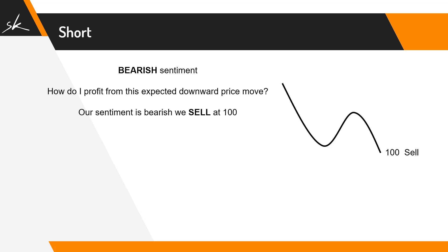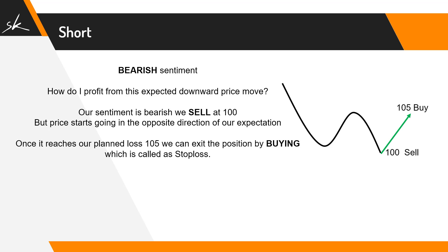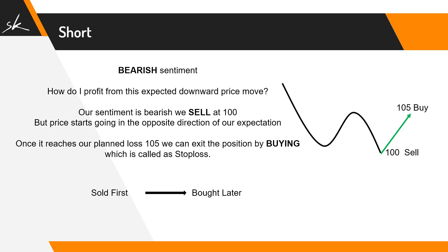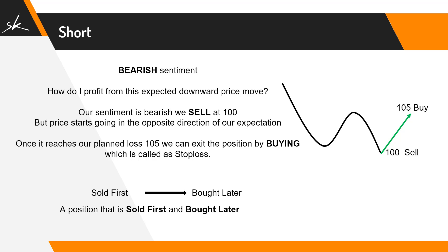Our sentiment was bearish, so we sold at 100 first. But let's assume prices start going in the opposite direction. In that case, we will have a planned stop loss — let's say it was 105. Once prices reach 105, we buy it back at a higher price, taking a loss of 5 rupees but closing the position. Therefore, when you're selling first and buying later, irrespective of whether it's profit or loss, such a position is called a short position.